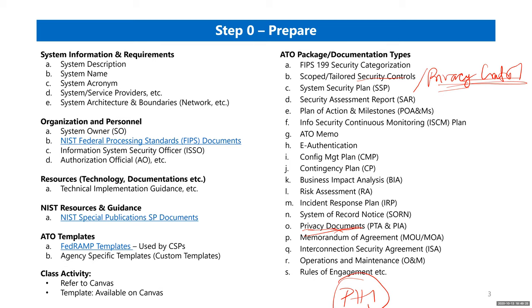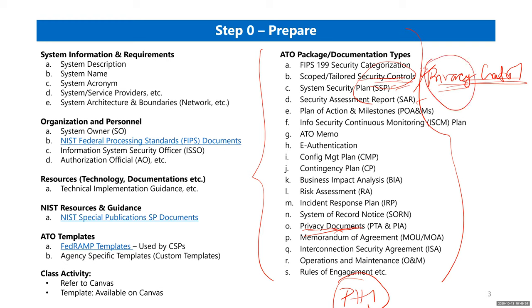You finish documenting your security controls in the SSP or a spreadsheet, but you are not tracking the privacy controls. When an assessor reviews your submission, they will ask: why does your control list not include privacy-specific controls? If you are collecting PII or PHI, every assessor will expect those controls to be included.